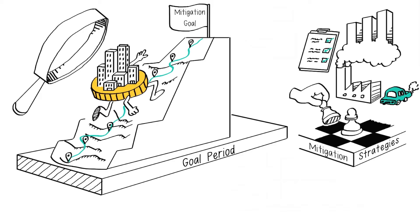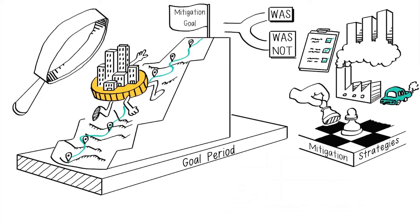At the end of the goal period, a similar process occurs but with the intention of determining whether the goal has been achieved and why it was or was not.